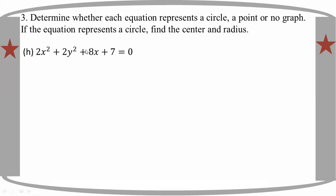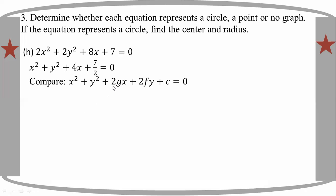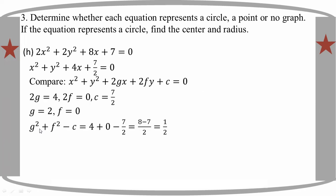The last one: X squared plus Y squared plus 4X plus 7 over 2. So 2GX plus 4X plus 7 over 2. G squared plus F squared minus 7 over 2.